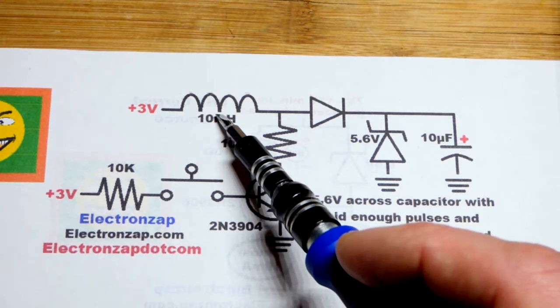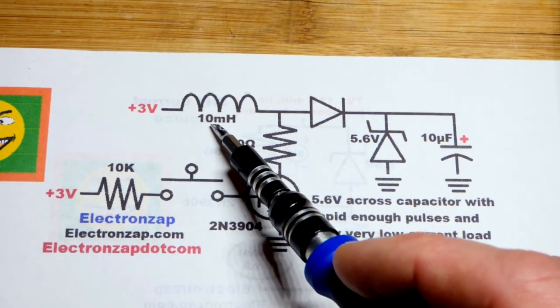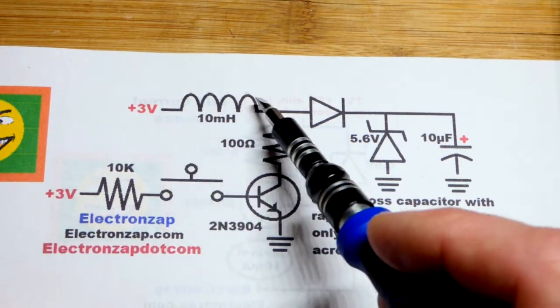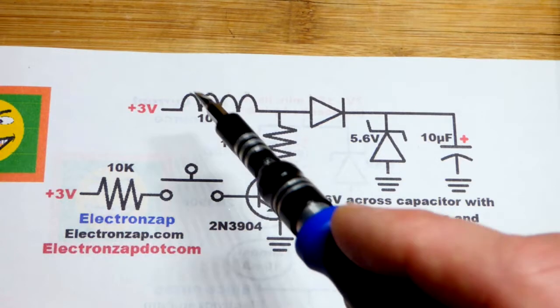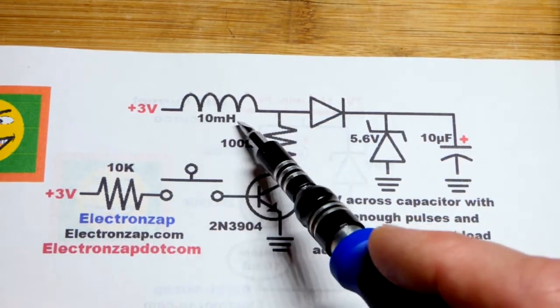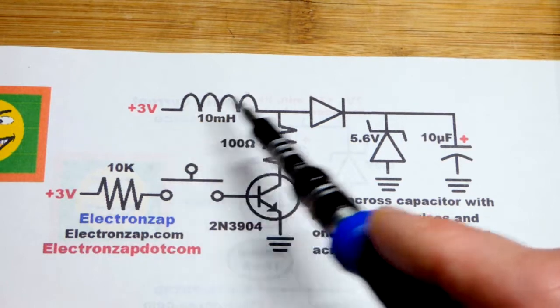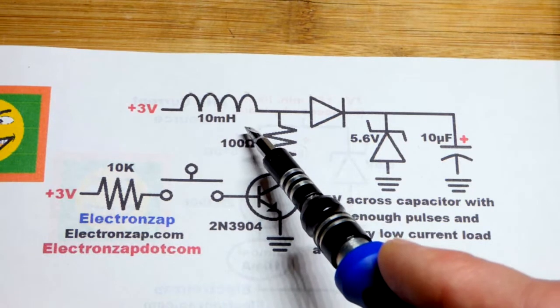Inductors have the electrical property of not liking rapid current changes. So at first when you apply power it takes a little bit for the current to get flowing, and then it gets to steady state. There's some internal resistance in the inductor, but otherwise current flows freely once it starts flowing.